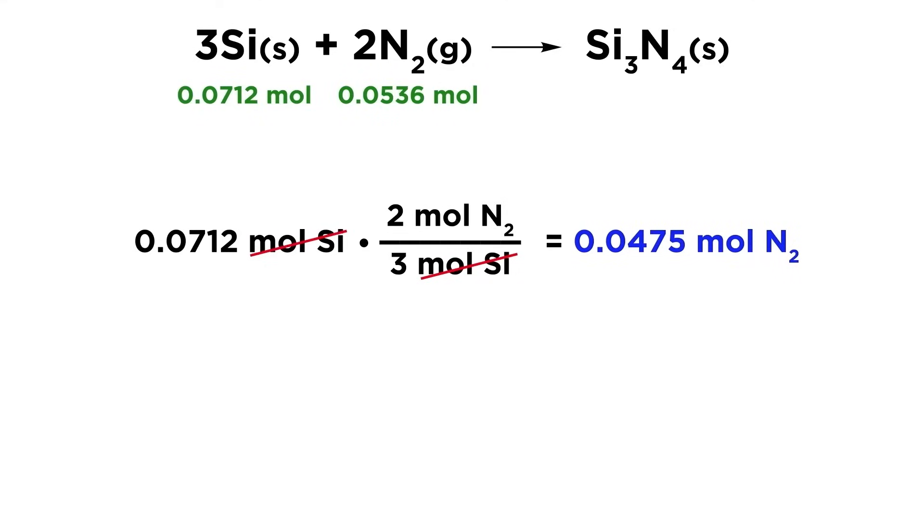Then the question becomes, do we have that many moles of nitrogen available? We do indeed have more than that. This means that silicon would run out first, and is therefore the limiting reagent.